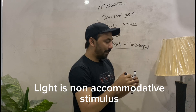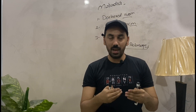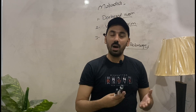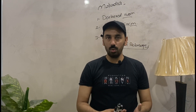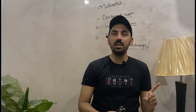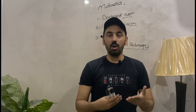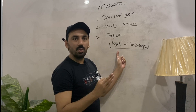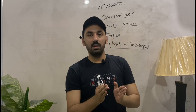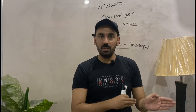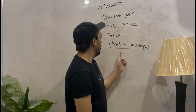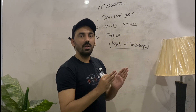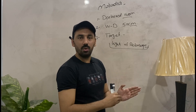The reason the target should be the light of the retinoscope is that light itself is a non-accommodative stimulus. Since we are not using cycloplegic drugs in Mohindra retinoscopy, we need other ways to relax accommodation. Factor number one: light. If the patient is looking at a dim light, that dim light will relax or paralyze the accommodation.